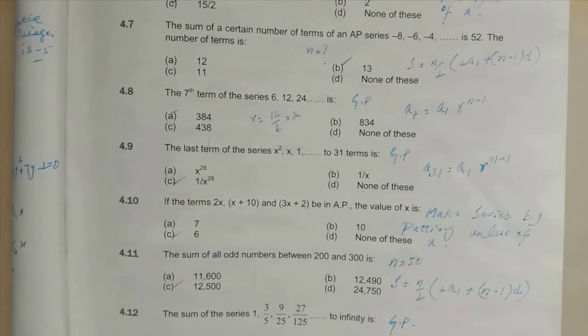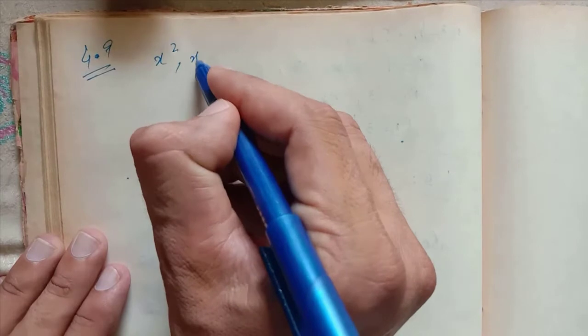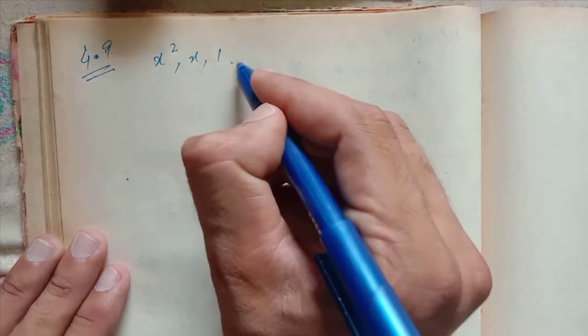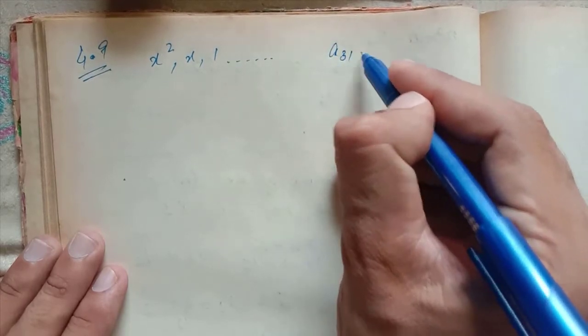So let's see which series this is. x², x, 1... 31 terms. Find a31.